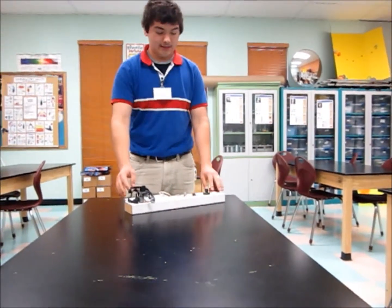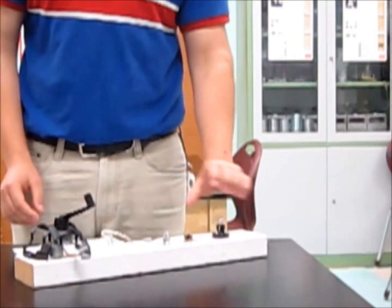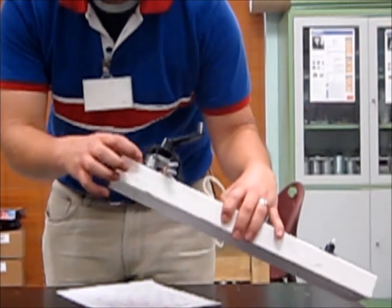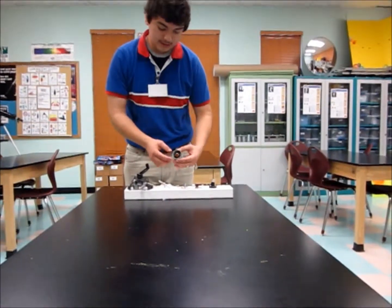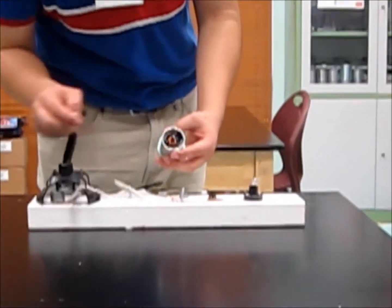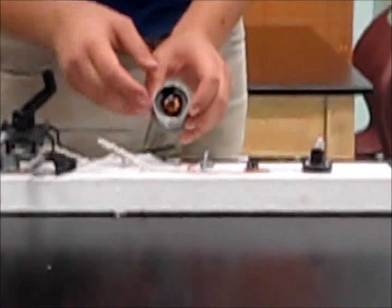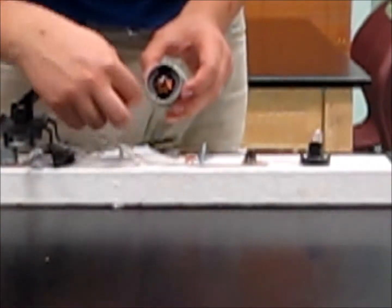So you're probably wondering, how does this work? And I'll show you. Inside of this metal casing, this is a better view of the inside of this motor right here. And as you can see, there's these copper coils inside of here and these two magnets on the outside.